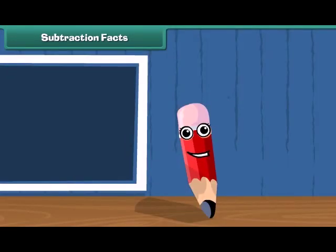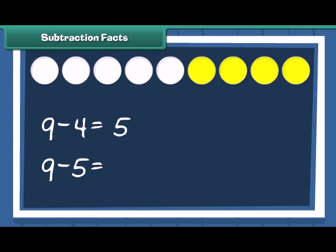Let me tell you about subtraction fact. We have 9 circles. Out of these, if 4 circles are colored, how many white circles are left? Thus, we have 9 minus 4, which is equal to 5, and 9 minus 5, which is equal to 4.